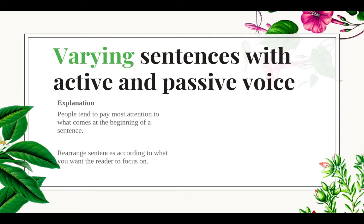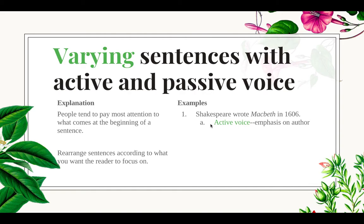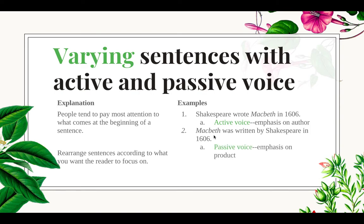Sometimes you want to switch things up to make sure what's at the beginning of the sentence is the most important thing, because that's what people pay the most attention to. For example, 'Shakespeare wrote Macbeth in 1606' is a clear example of active voice — the main acting subject comes first, placing emphasis on the author.